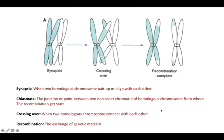Cytogenetically speaking, the recombination phenomenon is completed in three to four phases. The very first step of recombination is synapsis — when two homologous chromosomes pair up and come close to each other. After that, the non-sister chromatids of the two homologous chromosomes cross over with each other. They form a junction with each other, and this junction is called the chiasma. The phenomenon of making this chiasma is called crossing over.